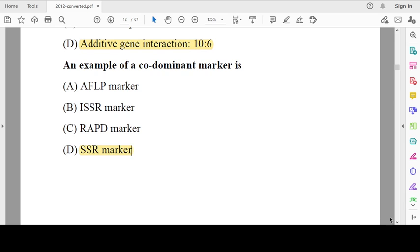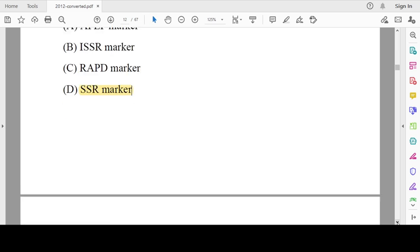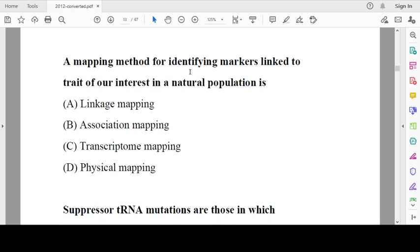An example of co-dominant marker is SSR marker, whereas AFLP, RFLP, SSR, and RAPD are dominant markers. A mapping method for identifying markers linked to a trait of interest in natural populations is association mapping.